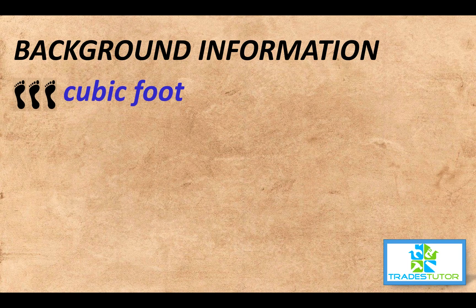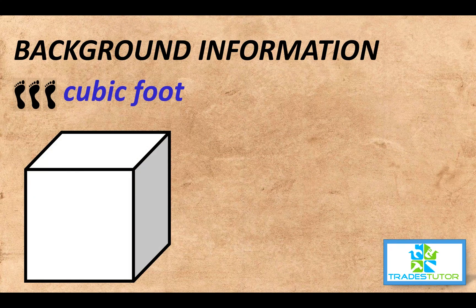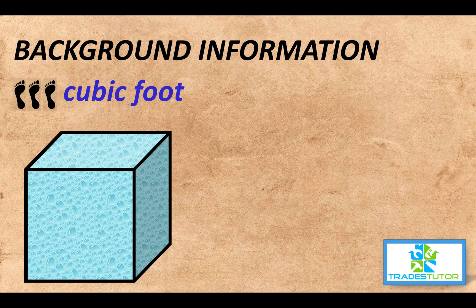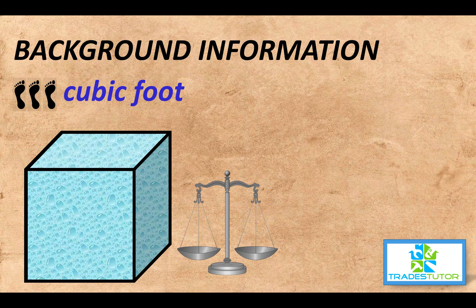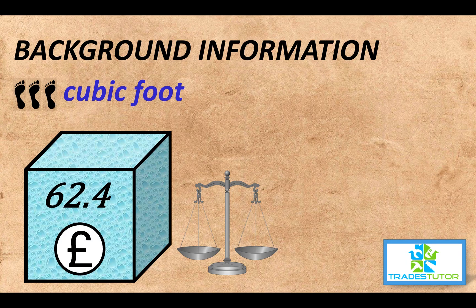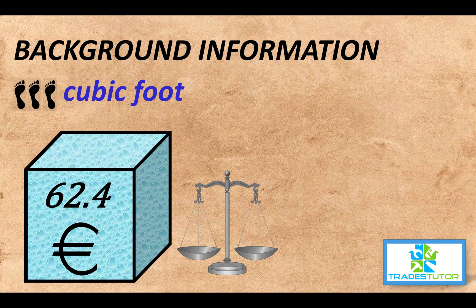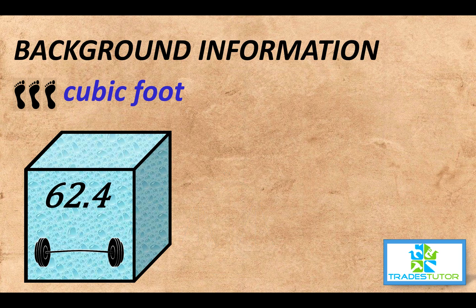First thing we're going to do is take a cubic foot and fill it up with water. We need to find the weight of a cubic foot of water. And what it is, is 62.4 pounds. (Quick note to the animator: make sure you put the right pound symbol in — not the British pound or the Euro!) So, 62.4 pounds. Sometimes it's hard to get good help around here.